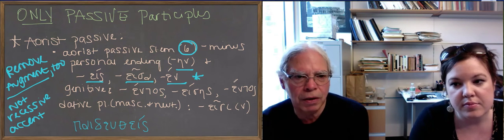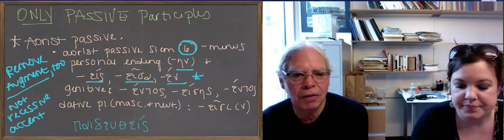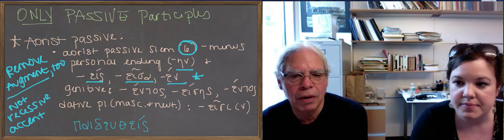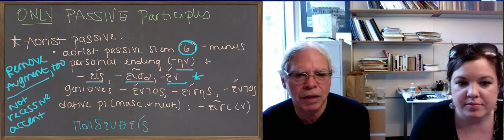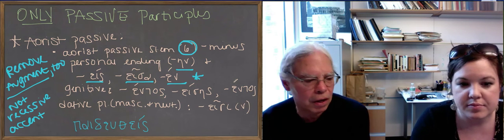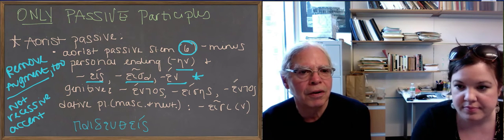Paideutheis, paideutheis̄a, paideuthen. Beautiful. That's an example. The forms are not difficult once you understand the genitives and the dative plural. So that's what you need to learn.